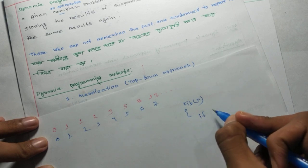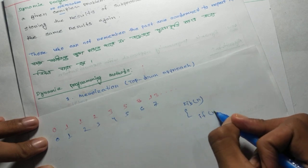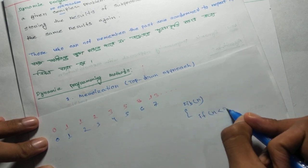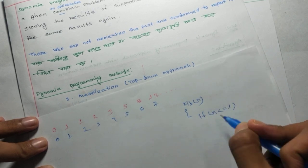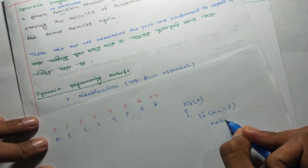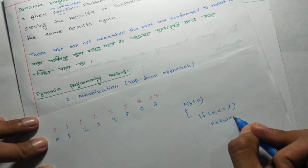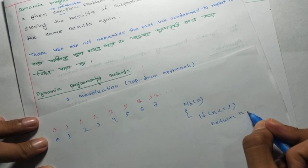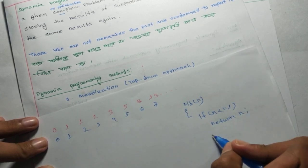For the Fibonacci function: if n is less than or equal to 1, then return n. Otherwise, return fib(n-2) plus fib(n-1).